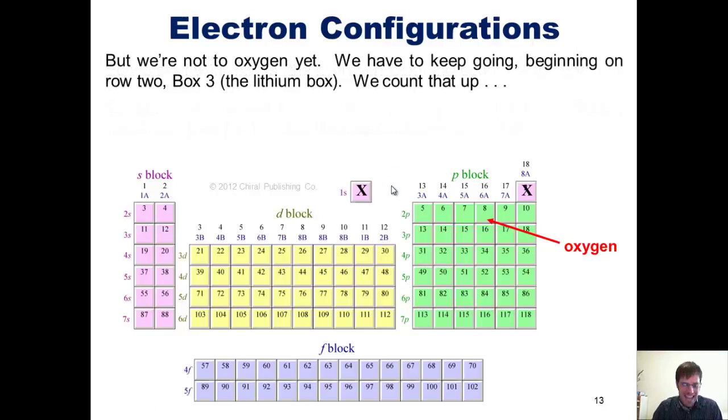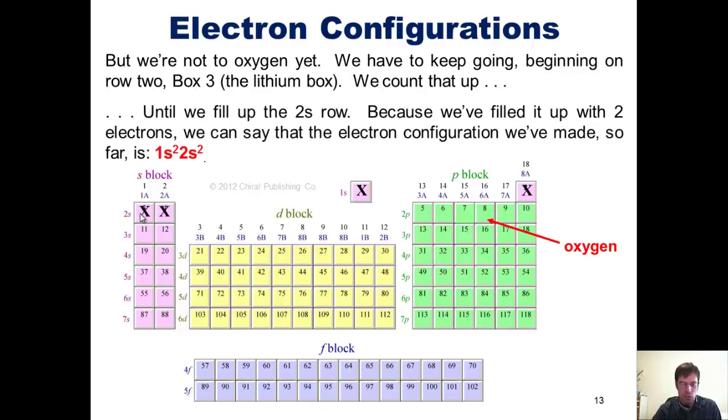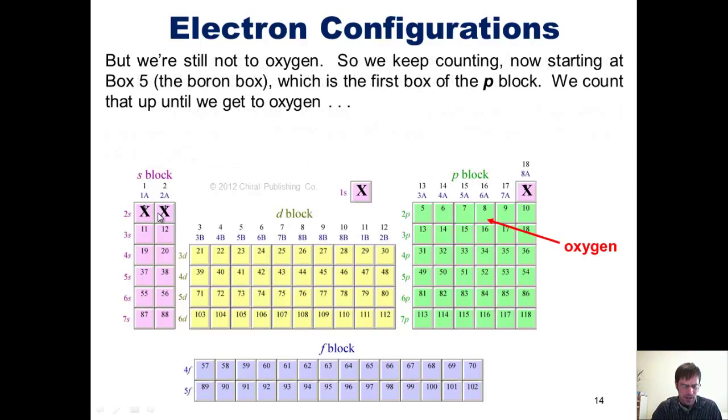But we're not to oxygen yet. That's in box 8 all the way down here. So what do we do? We continue going, counting here, beginning with box 3, the lithium box. We count up 3, 4, until we fill up the 2s row.